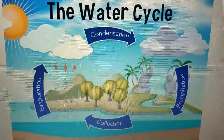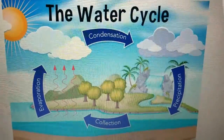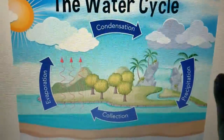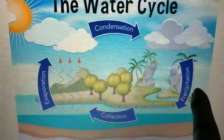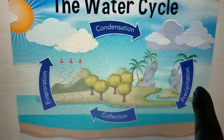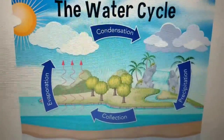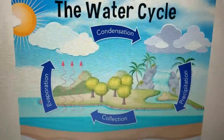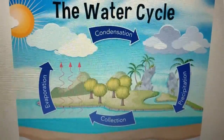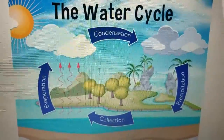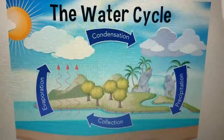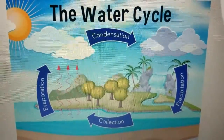This is the water cycle. What we're experiencing outside right now is precipitation. Precipitation is when water falls from the sky or from clouds as rain or snow.